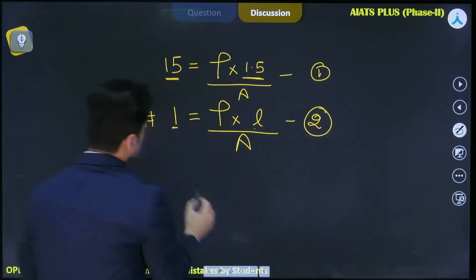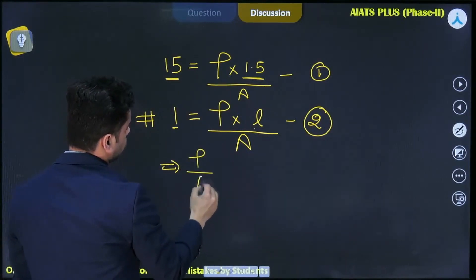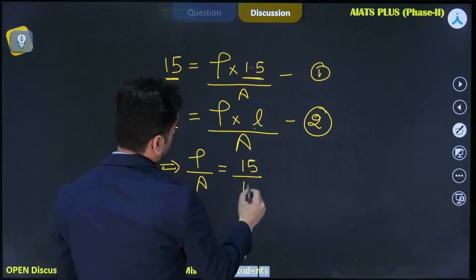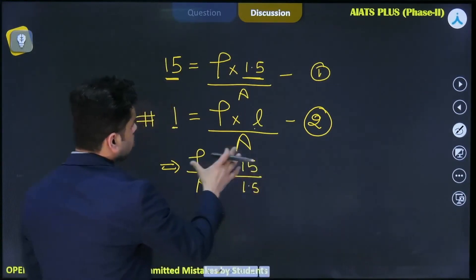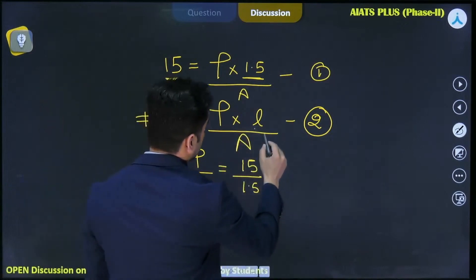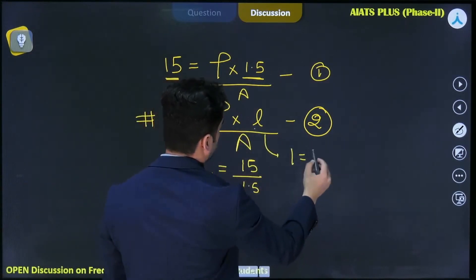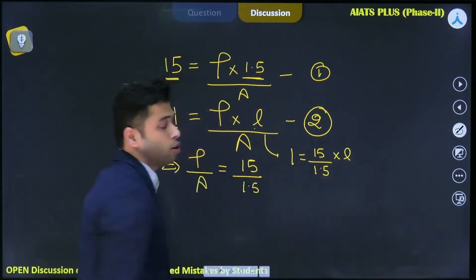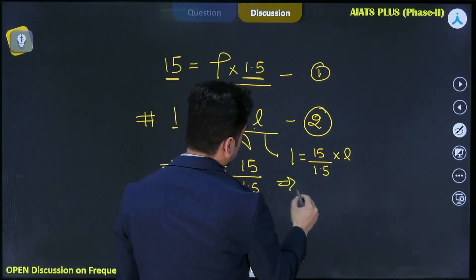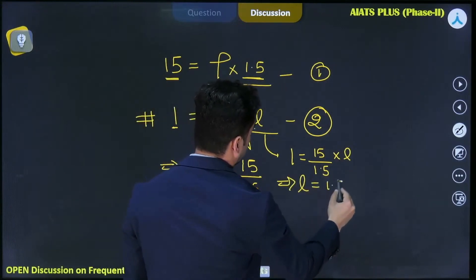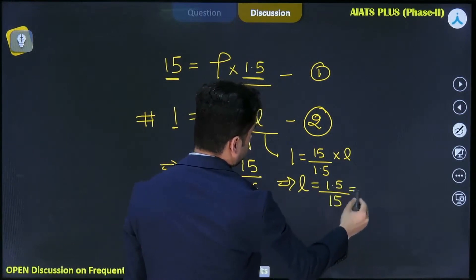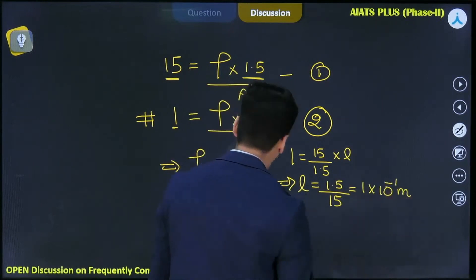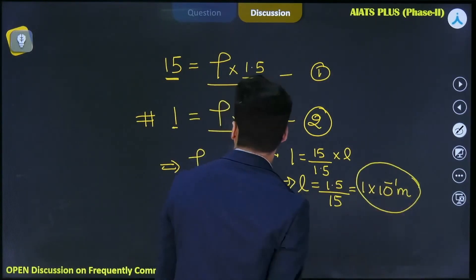From equation 1, rho over a equals 15 over 1.5. Substituting into equation 2: 1 equals (15 over 1.5) times l. Therefore l equals 1.5 over 15, which equals 1 by 10, or 1 times 10 raised to the power minus 1 meter. This is the correct answer.